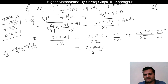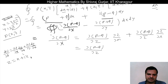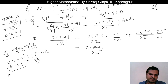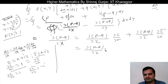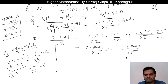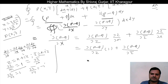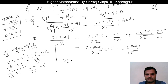We have p minus q, del z and del z-bar del x. Since z is x plus iy, differentiating with respect to x with y constant gives del z by del x equals 1. And z-bar is x minus iy, so del z-bar by del x is also 1. So del(p minus q) del x equals del(p minus q) del z plus del(p minus q) del z-bar.